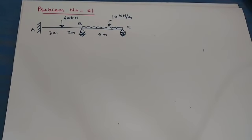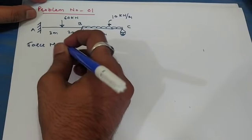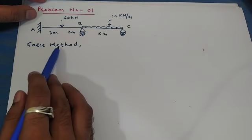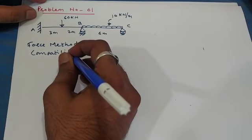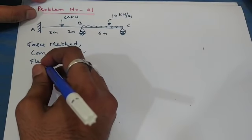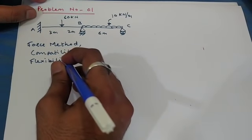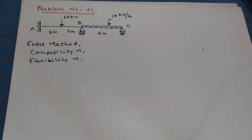In this video we will analyze a continuous beam using the force method. The force method is also called the compatibility method, the flexibility method, and in some books it is named the method of consistent deformations. So the question may say: analyze the continuous beam by force method, compatibility method, flexibility method, or method of consistent deformation.